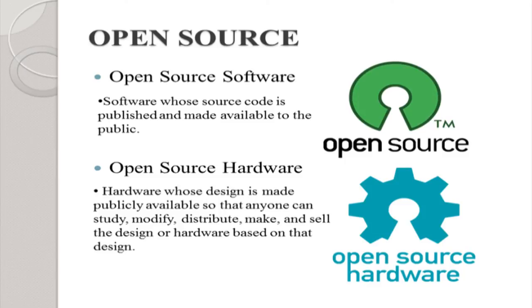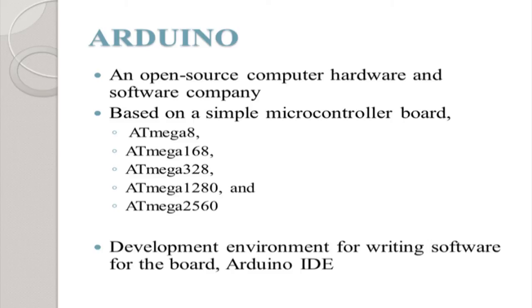Open source has been divided into two parts: open source software and open source hardware. Software is where the source code is published and made available to the public. Similarly with hardware — the designs are free to study, modify, and distribute. Arduino is the standard open source hardware. The board we are using is Arduino 328, which has 32 KB RAM, and there are different Arduino boards with different memory spaces.